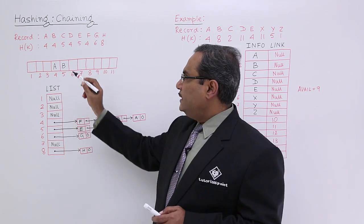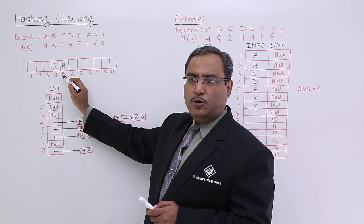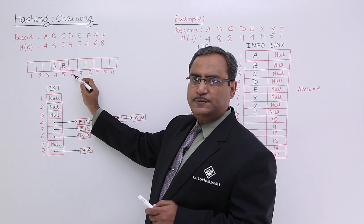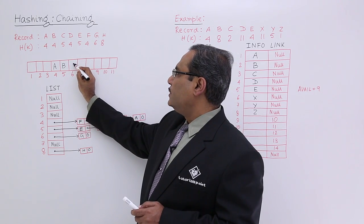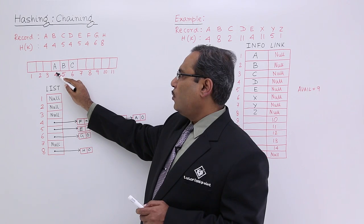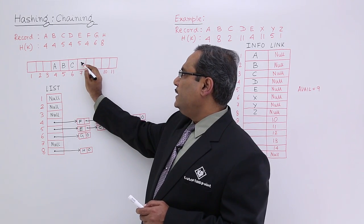Then I am getting C. C is tending towards 5, but the fifth location of this array is preoccupied. So due to the linear probing, I can reach to the next free space at a location of 6. So C will be stored here. Then D will be pointing towards 4, occupied, occupied, occupied. So at the seventh place, D can be stored.